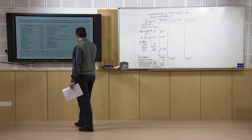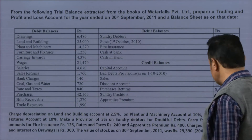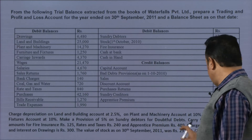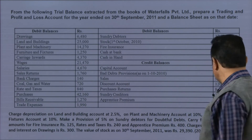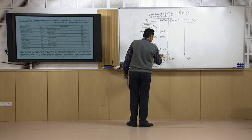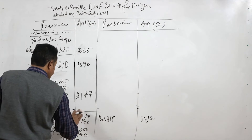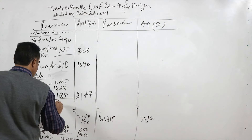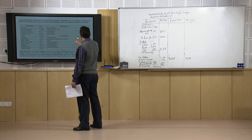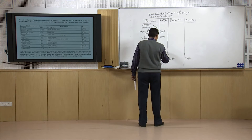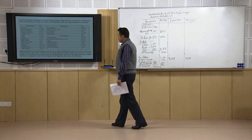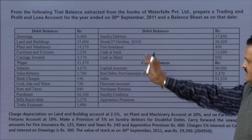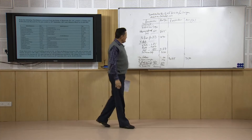We have taken the depreciation and provisions — the first effect in the profit and loss account; the second effect will be made in the balance sheet. The unexpired insurance has already been done. Now for interest on capital: the adjustment charges 5% interest on capital of 90,000 rupees, which works out to 4,500 rupees. This is the first effect — debited to profit and loss account.